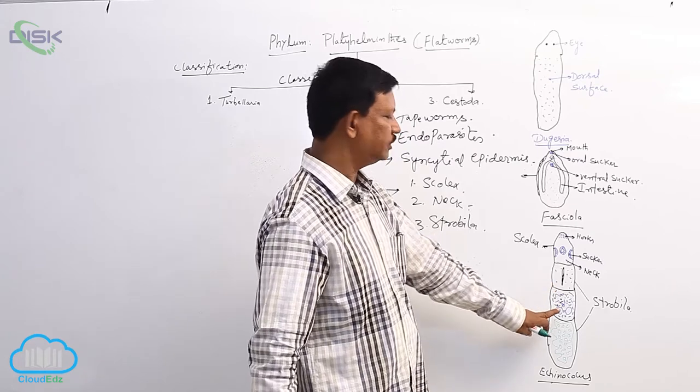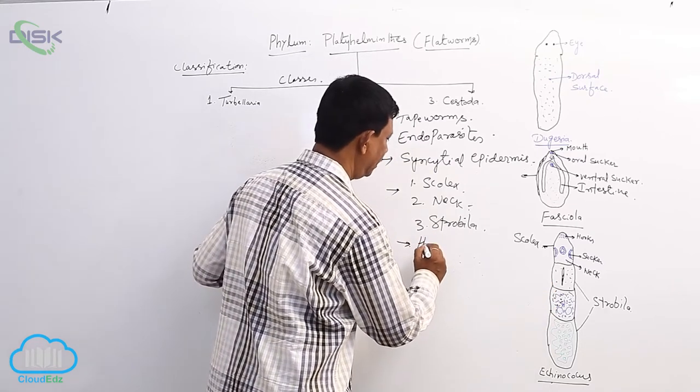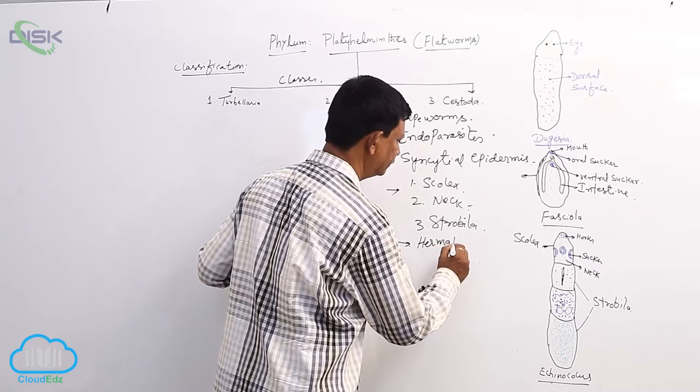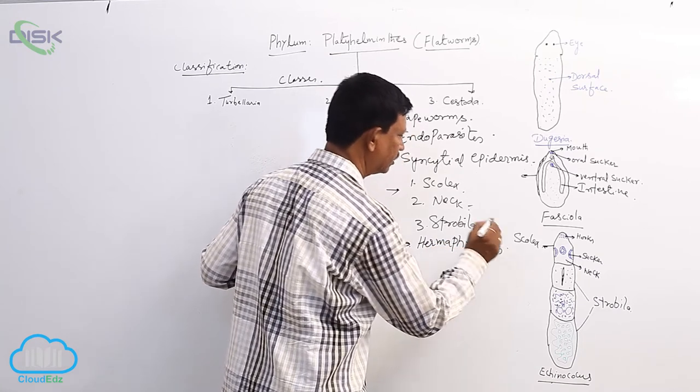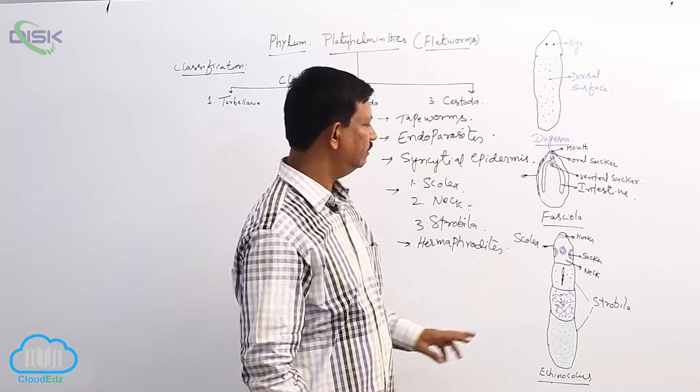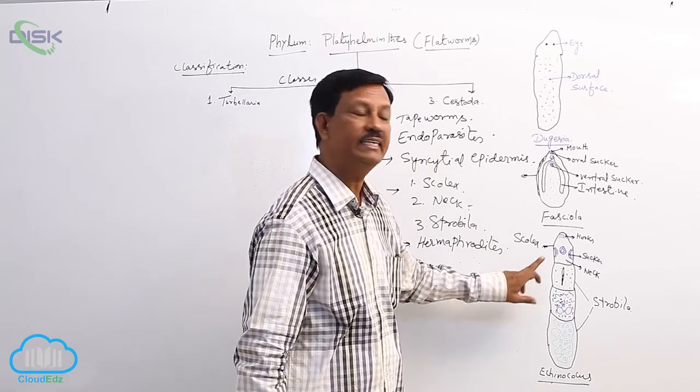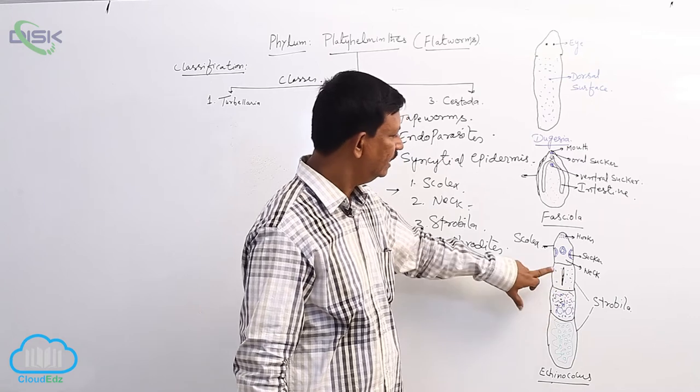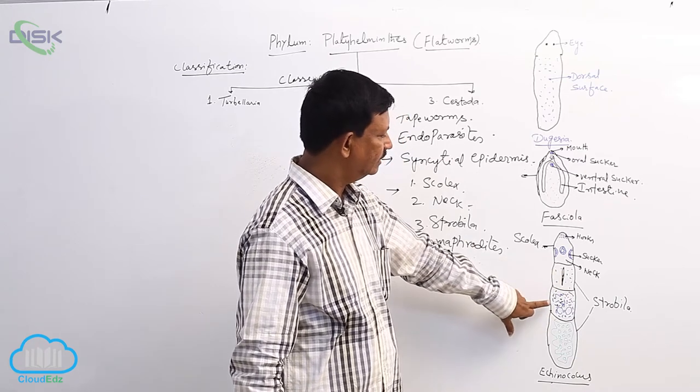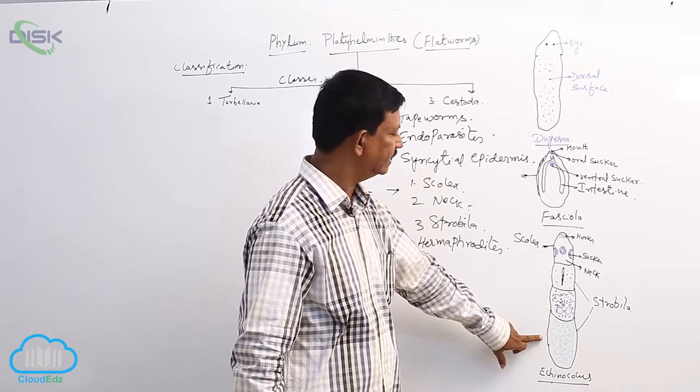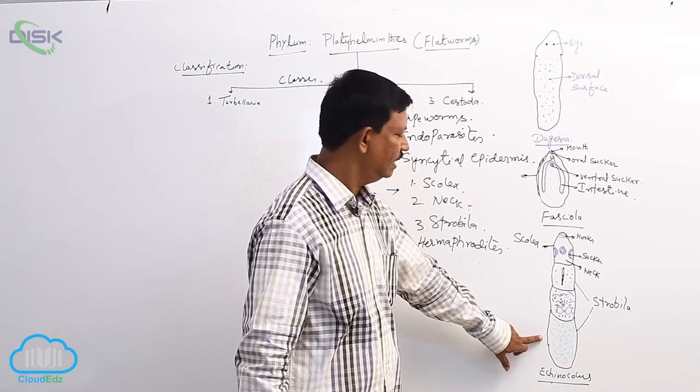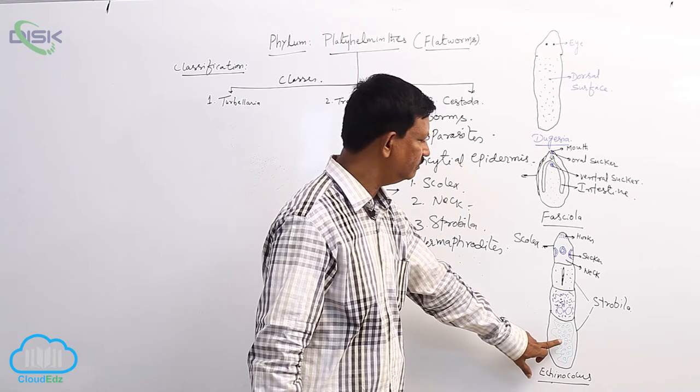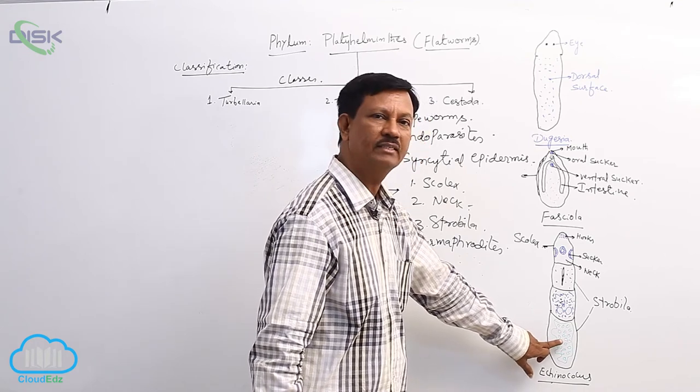The reproductive system is hermaphroditic—both male and female reproductive organs are present in the same individual, not only in one segment but in each and every segment. There are immature segments, mature segments, and gravid segments where reproductive organs are degenerated and disappeared, and the uterus is branched and filled with eggs.